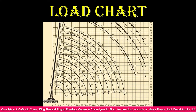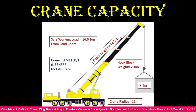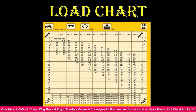For crane capacity, the formula is: (hook block weight + material weight) divided by safe working load, multiplied by 100, to get the percentage of capacity used. You can consider hook block weight together with the load weight. The safe working load comes from the load chart. Here I calculated with a boom length of 44.5 meters.